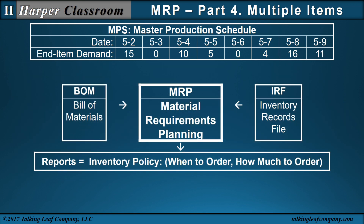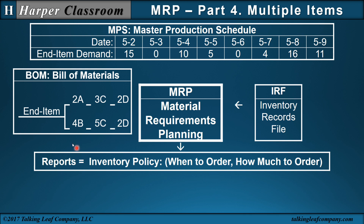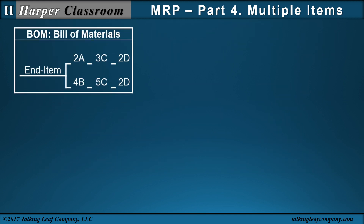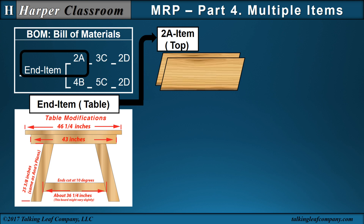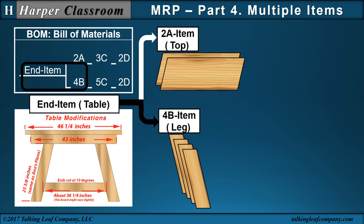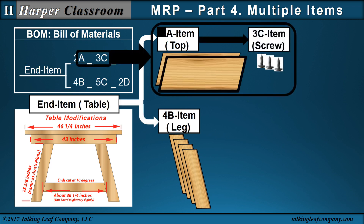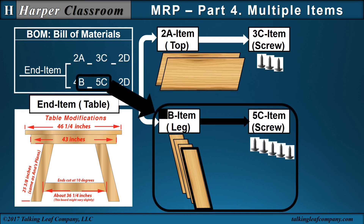Next, let's consider the Bill of Materials. The Bill of Materials for this video will consist of the end item, A item, B item, C item, and D item. The end item is a table. The table requires two A items — two laminated tops for every end item. Every end item also requires four B items, which is four legs per table. Each A item requires three C items, where a C item is a screw.